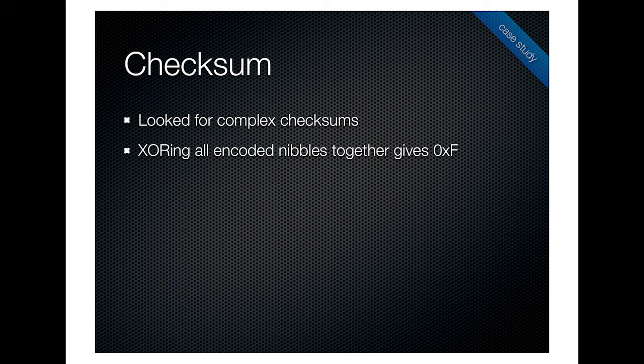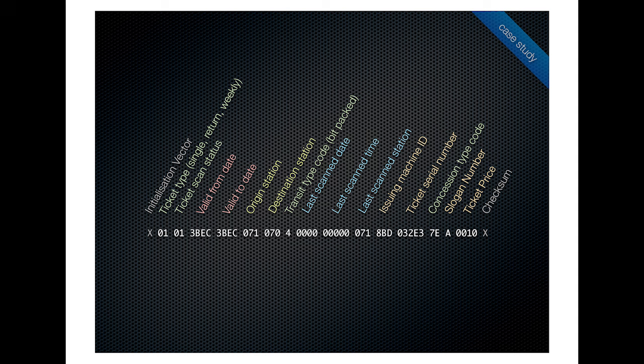We looked at a heap of popular checksums — the Luhn checksum used on credit cards, cipher block chaining, and some really complex checksums. In the end, it turned out we were looking at the wrong representation of the data: we were doing it on the unencrypted data, whereas the checksum actually applied on the data before decryption. It was just XORing all the encoded nibbles together to give F — these people really liked XOR. Once we'd done that, we made a diagram showing all the fields: slogan number, ticket type, scan status, every piece of information you'd need. Data that wasn't on the physical ticket was often on the mag stripe — for example, when you bought a specific ticket type, it didn't print the origin station on the front, but it was actually encoded on there.